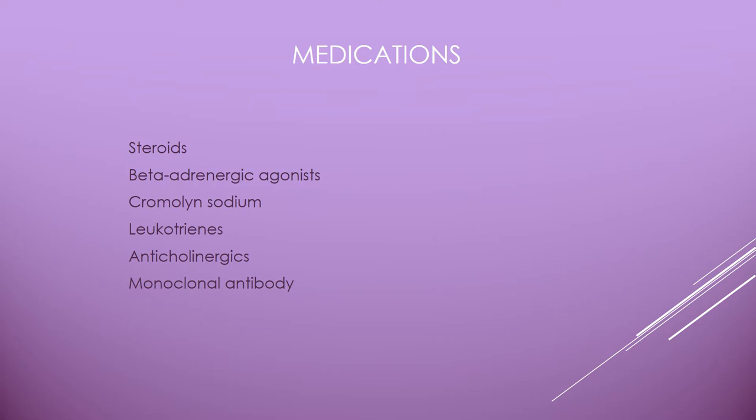Beta-2 agonists — short-acting ones include albuterol, levalbuterol, and terbutaline. These are smooth muscle relaxants that also stabilize mast cells so they don't release contents and promote inflammation. They are effective for exercise-induced asthma and can be given by nebulizer or pill. Terbutaline can be given subcutaneously or IV — recall from OB that terbutaline was given to moms with preterm labor because it's a smooth muscle relaxant causing uterine relaxation. Anything given by nebulizer or inhalation has a much faster effect.